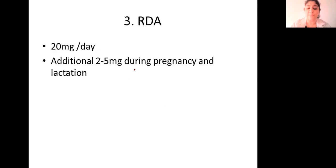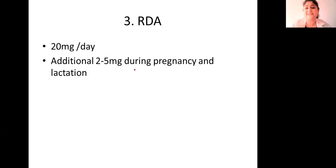Let us talk about the RDA — the recommended dietary allowance. It is about 20 mg per day. During pregnancy and lactation, the demand increases by 2 to 5 mg.